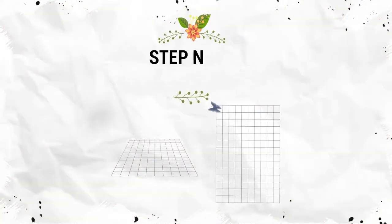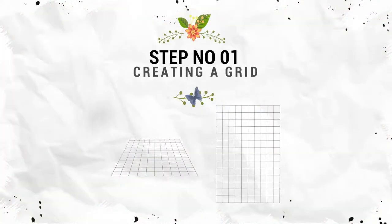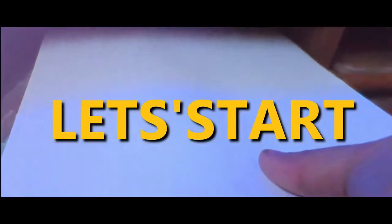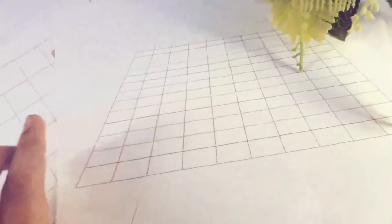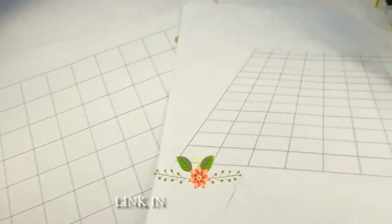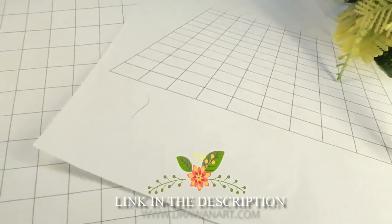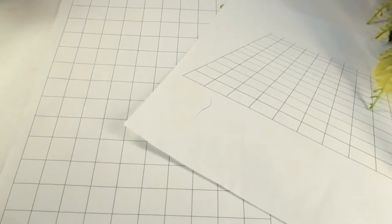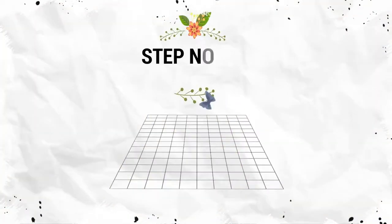First of all, before we begin, grab yourself two pieces of paper. The first step to creating this 3D illusion is to draw both grids. I made it pretty easy by creating a template for the grid, so simply download your template and print it out.